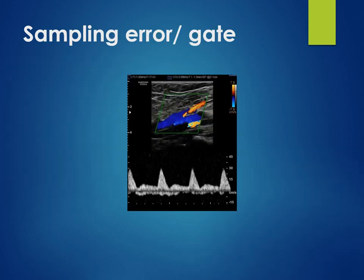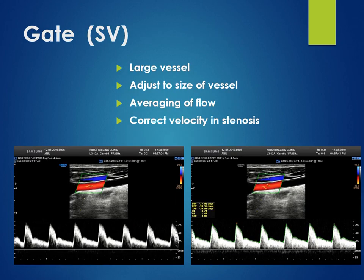While putting the Doppler gate or the sample volume, we should place it properly so that we do not get a mixed pattern of the vessel of interest and the adjoining vessel. The sample volume or the gate should be adjusted properly. This is true in a larger vessel like a common carotid, where a narrow gate will give an underfilling of the spectrum, whereas if you adjust the gate, there is an averaging of blood flow and we can see a completely filled spectrum.